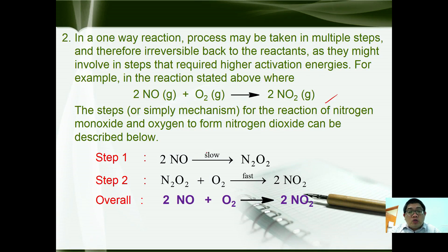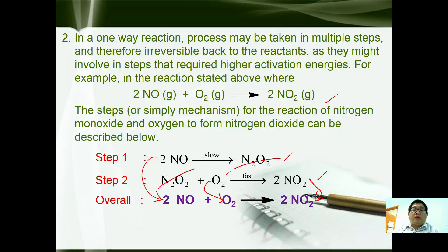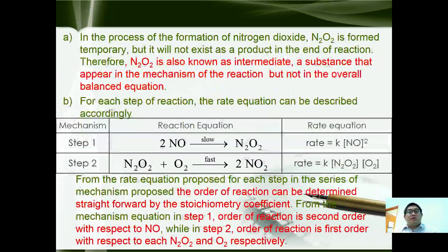In step one, 2NO first reacts to form N₂O₂, and N₂O₂ further reacts with O₂ to form 2NO₂. The overall equation can be obtained by cancelling intermediates across step one and step two. In the process of forming nitrogen dioxide, N₂O₂ is formed temporarily but does not appear as a product at the end of the reaction.